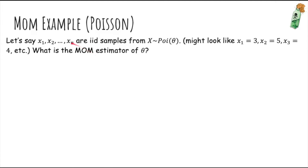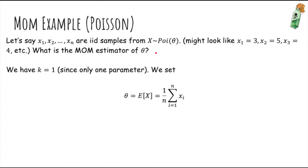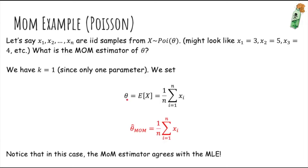What if x1 through xn are samples from a Poisson distribution? We still only have one parameter, so we have just the same equation: the first true moment should equal the first sample moment. The expected value of a Poisson is just the parameter theta, so theta hat is simply the sample mean. Here, the method of moments agrees with the maximum likelihood estimator.